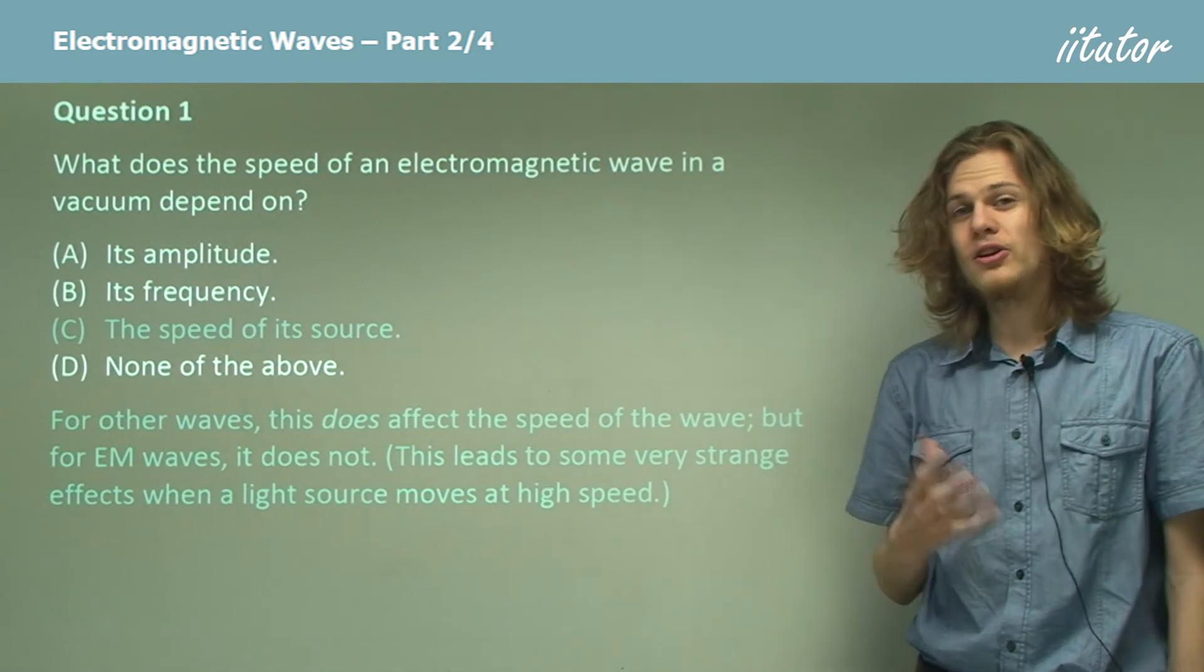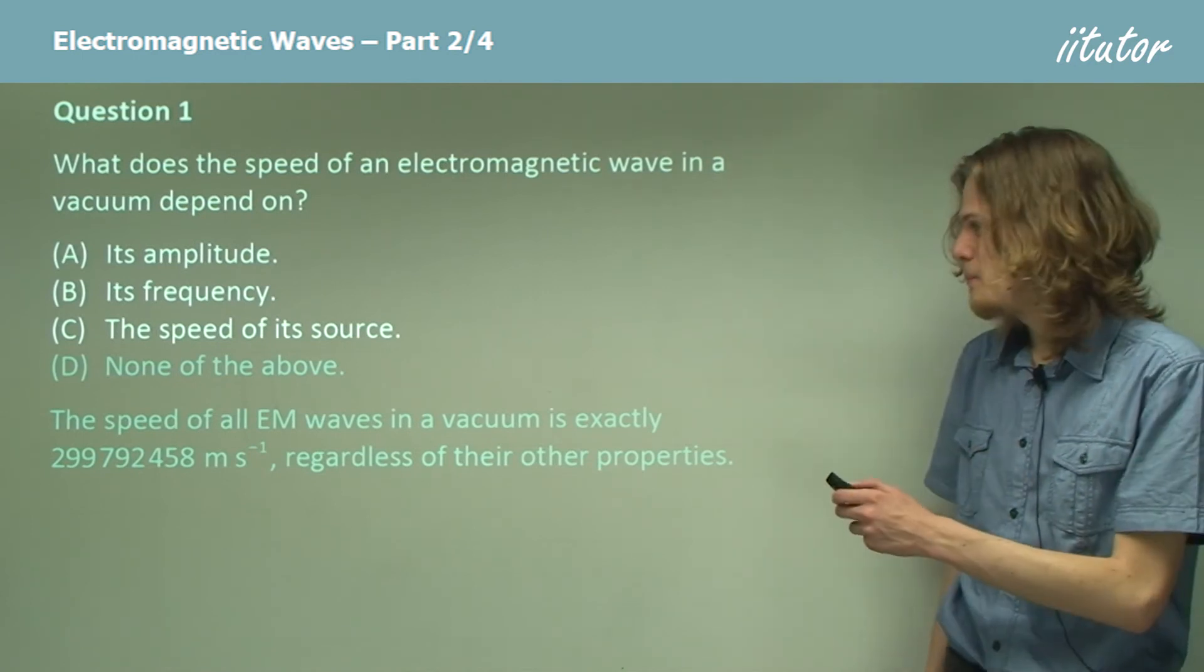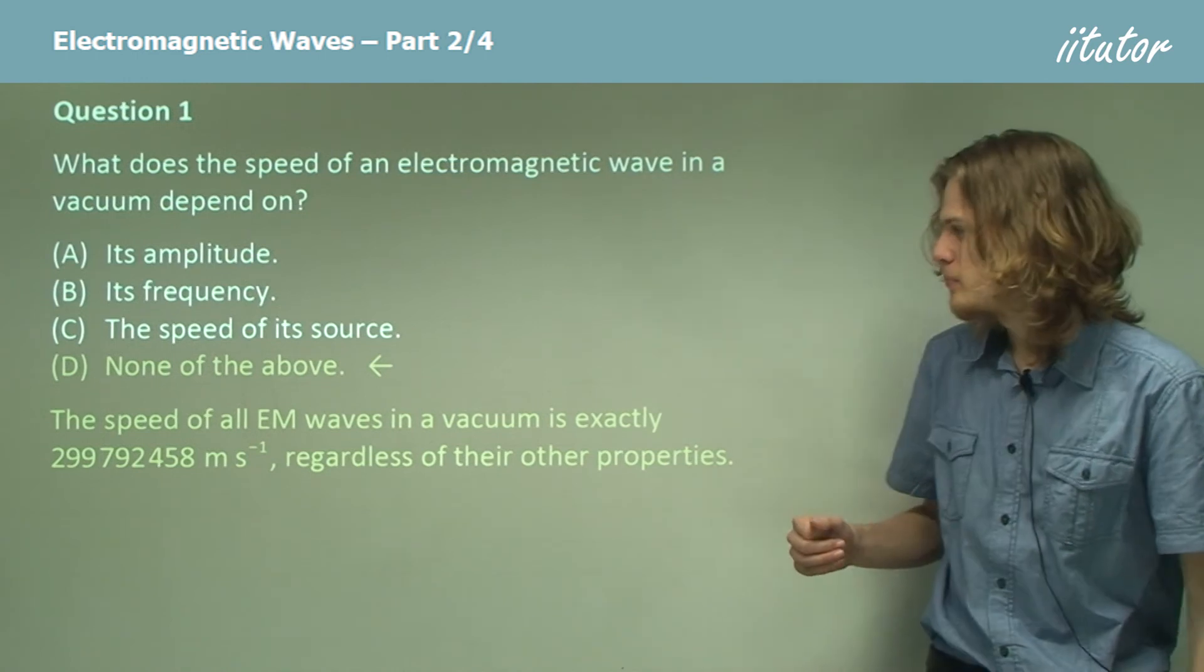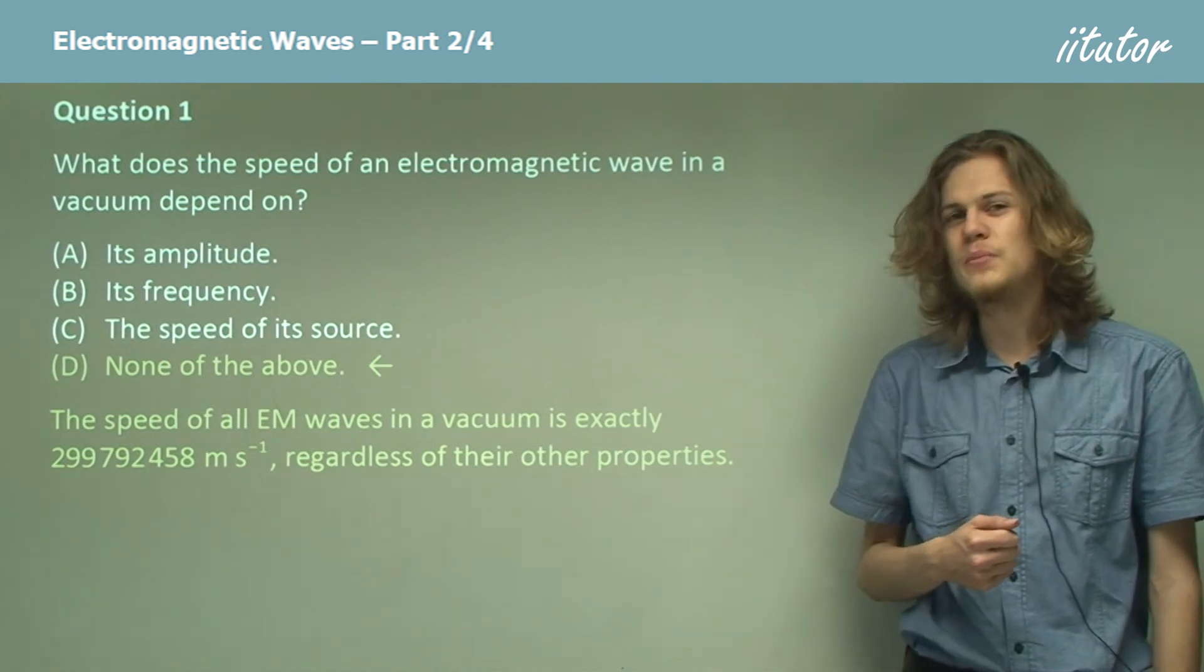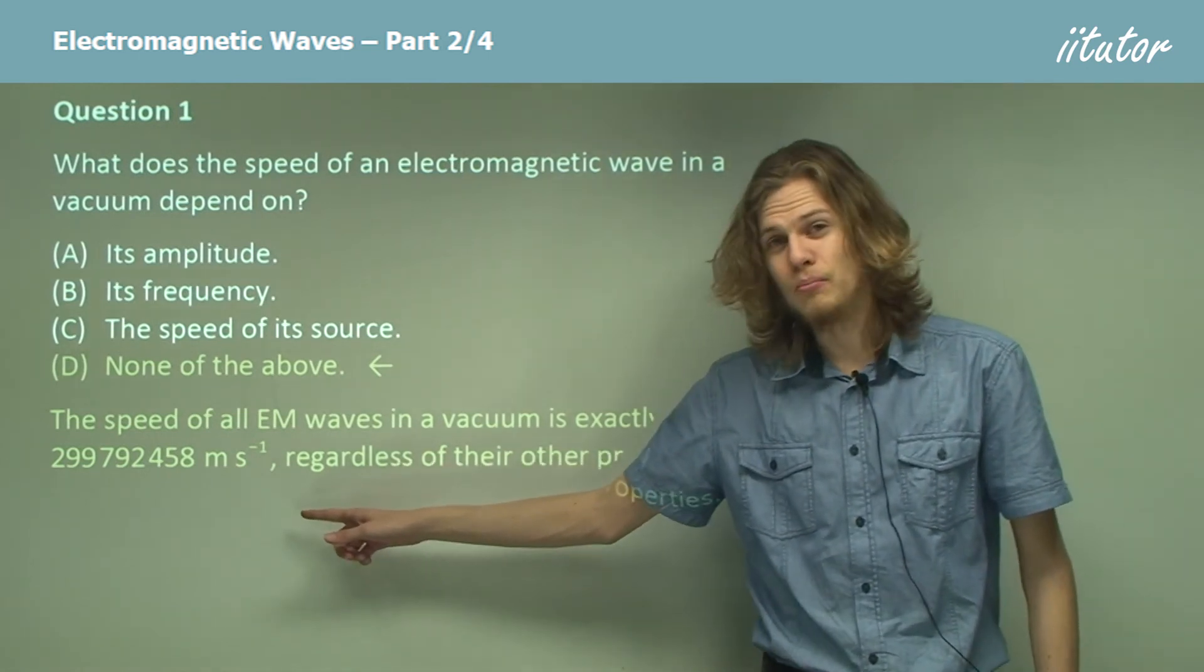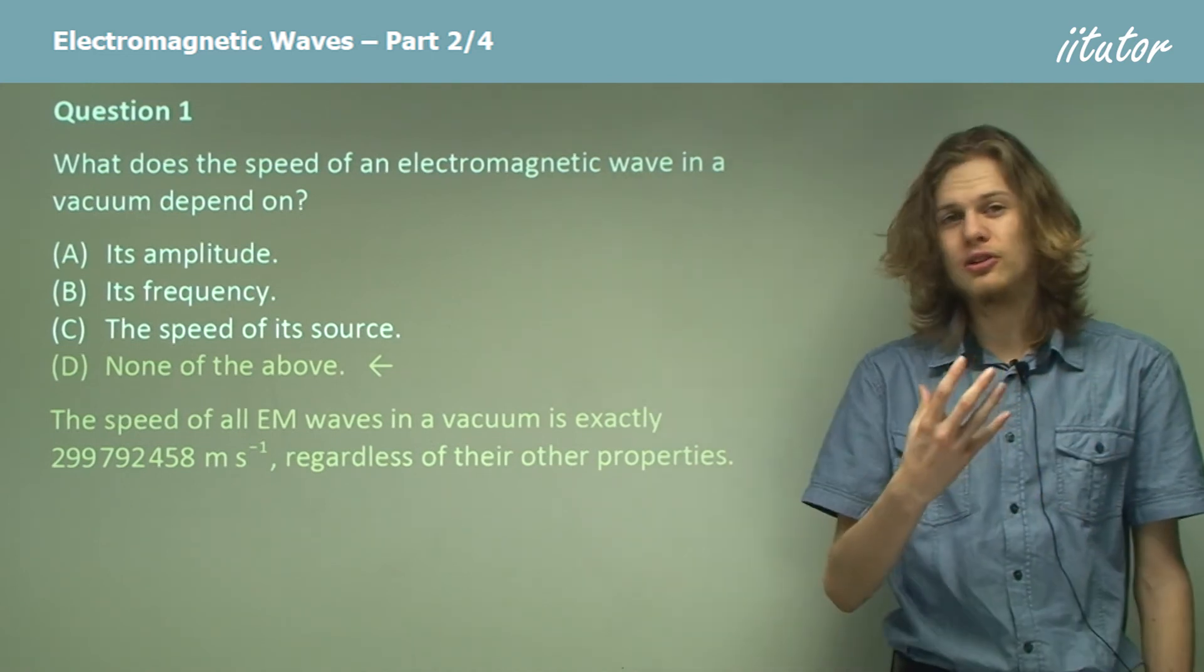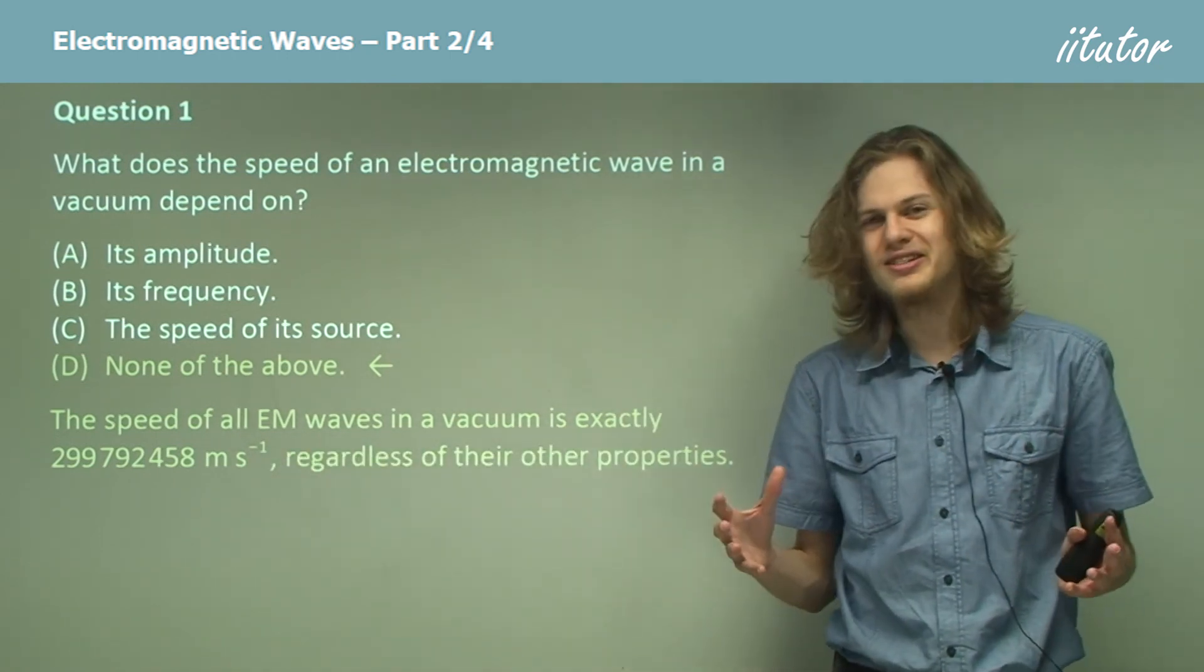If none of these are right, then the only answer left is D, none of the above. And it turns out that of course this is the correct answer. In a vacuum, beams of light, as well as all electromagnetic waves, always travel at precisely the same speed, and that happens to be 299,792,458 metres per second. Now you might at first assume that's an approximation, but in fact this is an exact number, and it's how we define the length of a metre. If for example we discovered that the speed of light was a little bit faster or a little bit slower than we thought it was, then instead of changing this number, we would simply change how long a metre is.